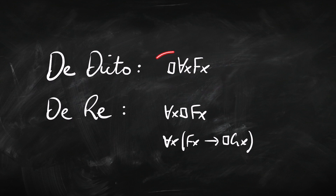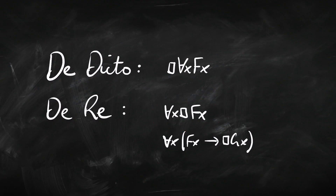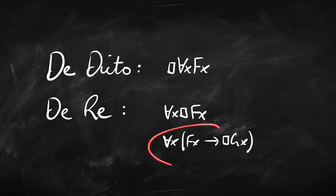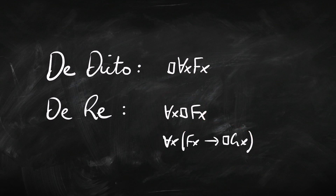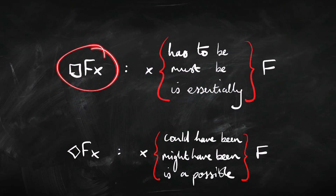When we're talking about de re uses of modality, we're talking about a thing which has to be or could be a certain way. We might divide the ways a thing could be into the ways it has to be and the ways it could be but doesn't have to be. Here's a de dicto use of the box — this sentence 'everything is F' is necessarily true, read as 'necessarily everything's F.' Here's a de re use: everything is necessarily F, meaning for every individual thing it is necessarily that way. For a de dicto use, we tend to find the box or diamond outside the scope of the quantifier; for a de re use, typically you find it within the scope of a quantifier.